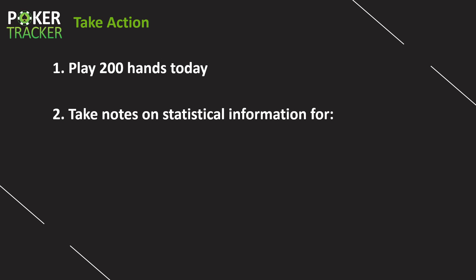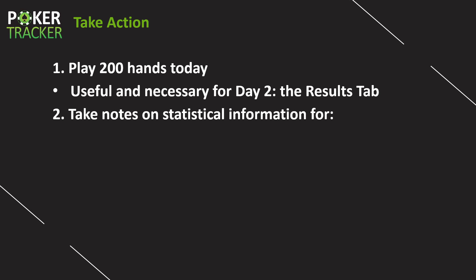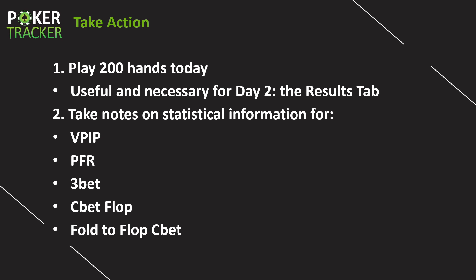We end all of these videos with one or more action steps. Today there are two. Step one: play 200 hands today — make sure you have the Get Hands While Playing feature turned on. This will be very useful and necessary to get the most out of the day two video tomorrow, where we look at the Results tab. Step two: take notes on statistical information, specifically for the HUD stats within the default PokerTracker4 HUD — look up VPIP, PFR, 3-bet, C-bet flop, and fold to flop C-bet. How you take notes is totally up to you — a physical journal, Evernote, Microsoft Word. As you're studying, take notes on everything so that while you're playing in the future, you can refer back to them to help make good decisions.